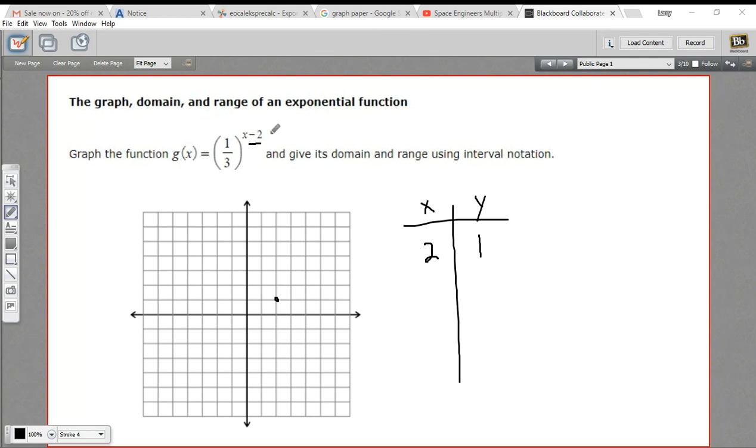So what this minus two does, essentially, is just move the graph over to the right two spaces. If you had a positive value here, it would move it to the left. So that's one way that an exponential graph can be translated.